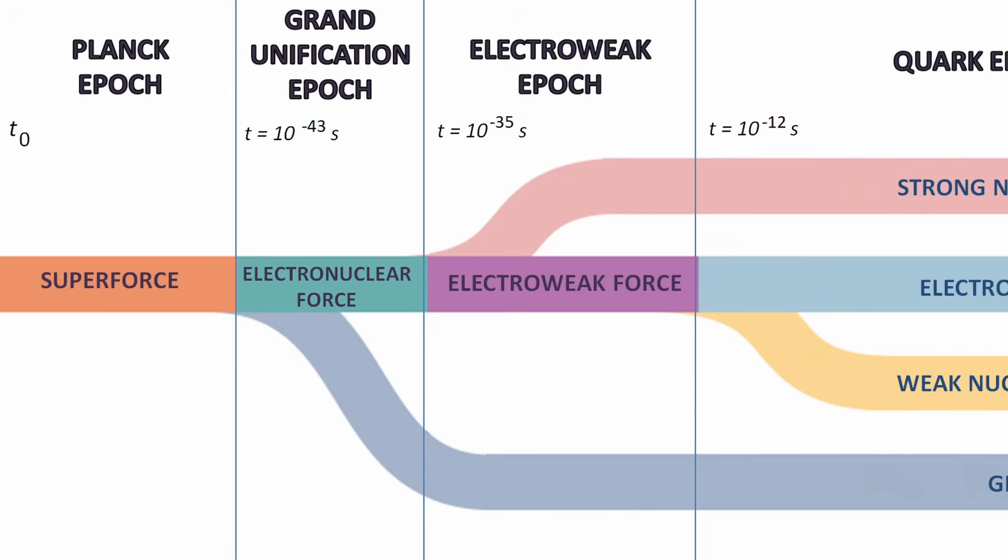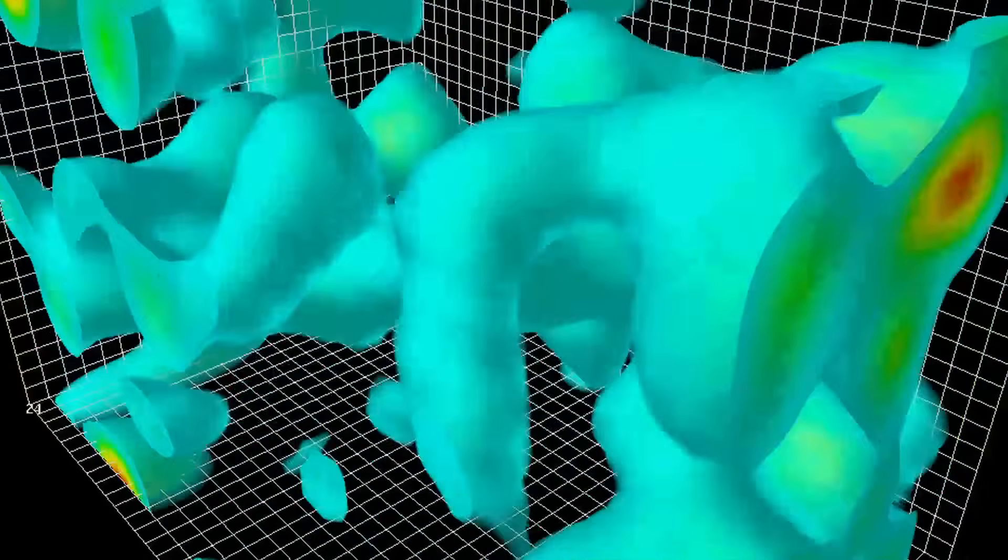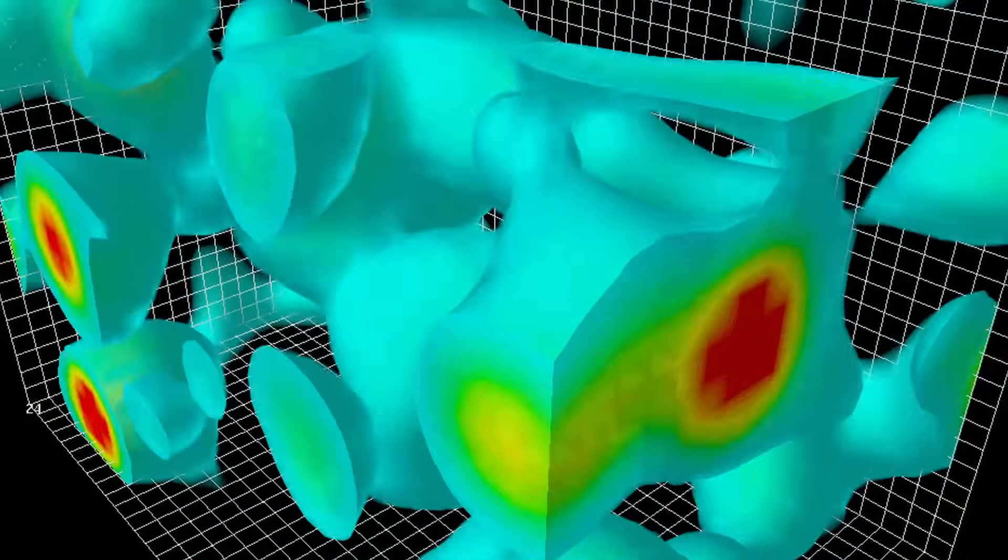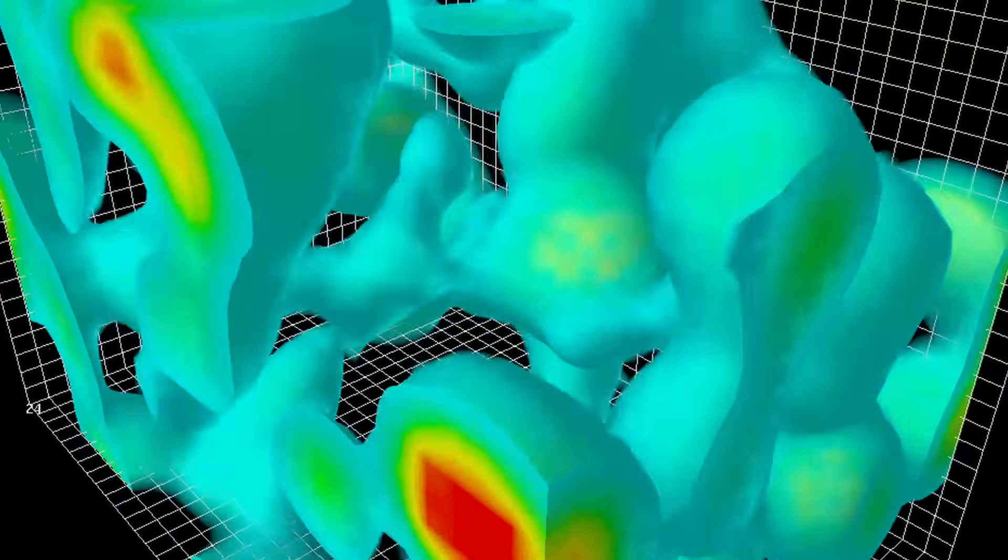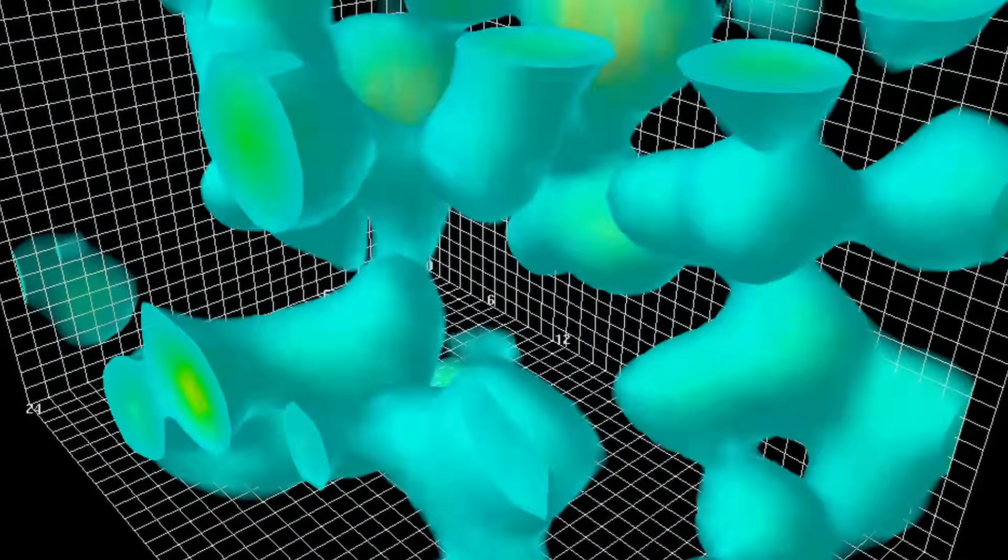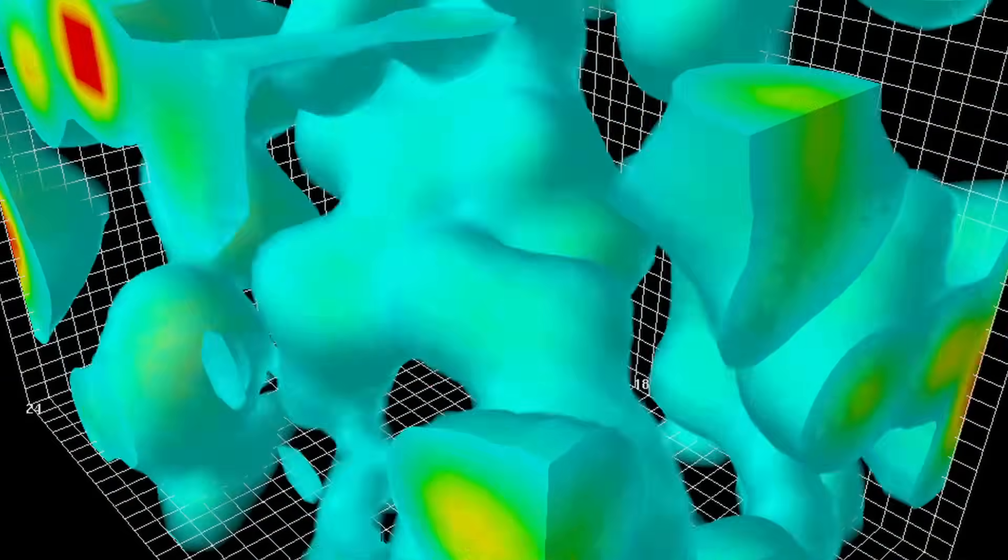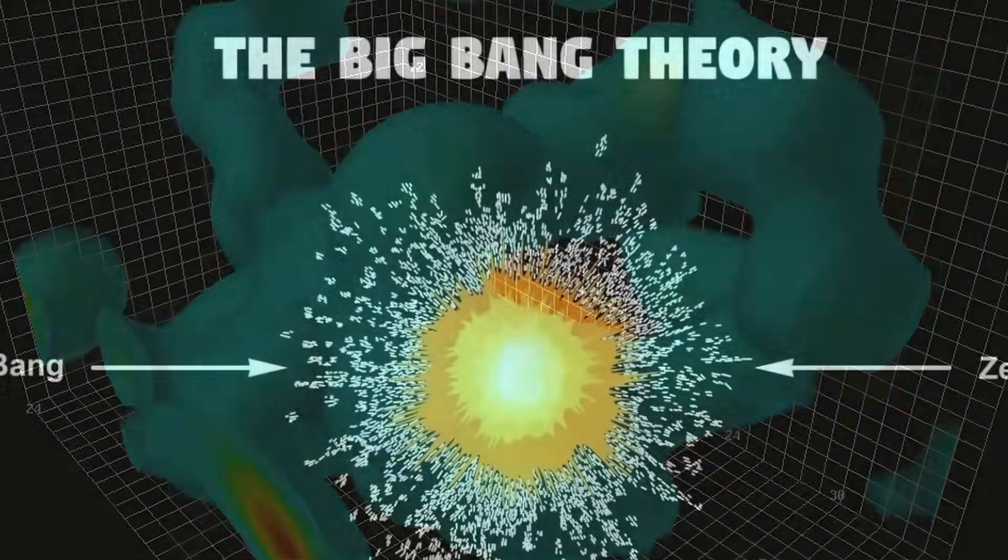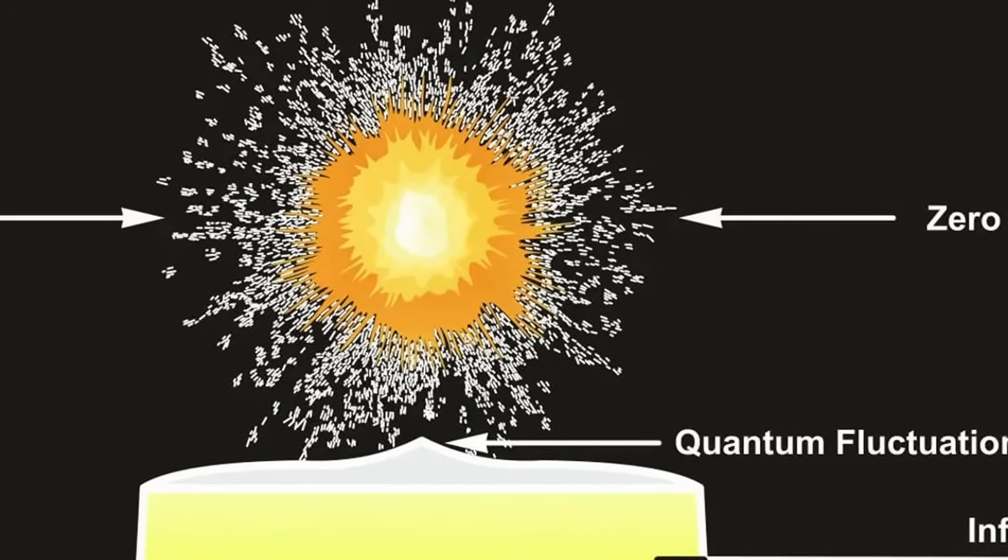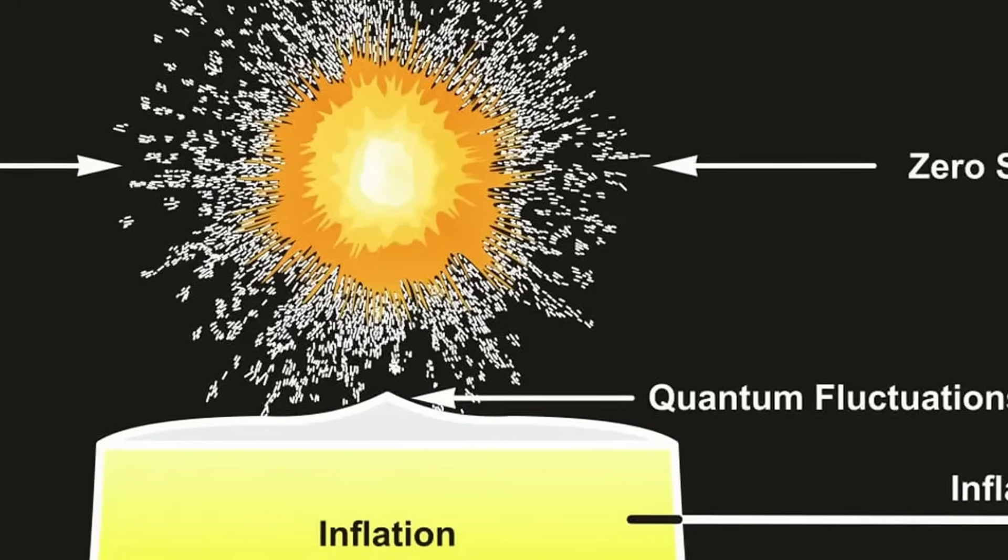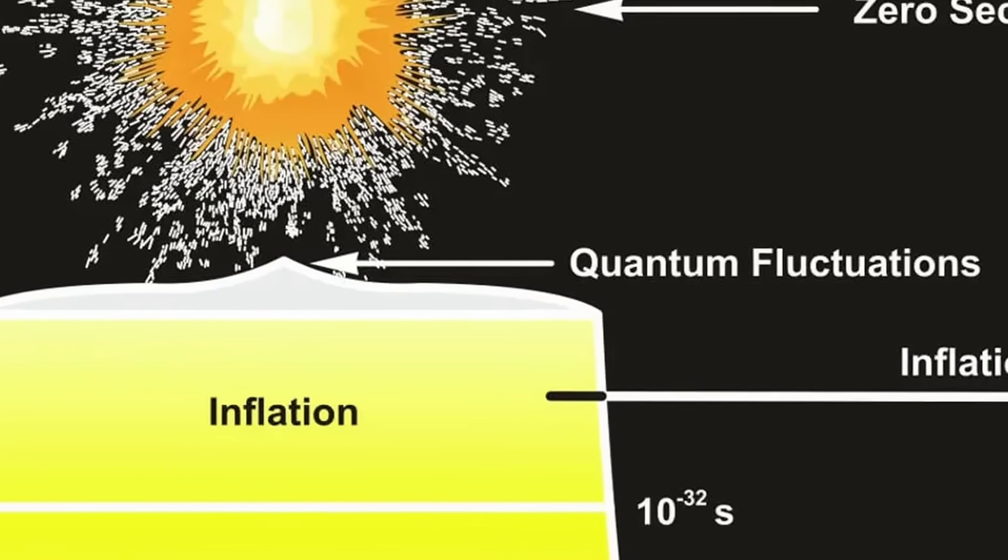This unified force is referred to as the superforce. Quantum fluctuations during this era slightly stretched or compressed space itself. In quantum physics, energy is never perfectly still. Even in empty space, tiny amounts of energy randomly appear in and out of existence. These tiny, random variations in energy are called quantum fluctuations. Every tiny change in the space itself during this era mattered because the universe was so tiny. In other words, any tiny variation at this point would be significant later when space expanded to macroscopic scales.